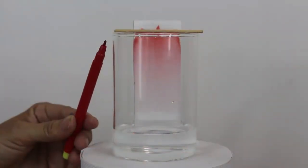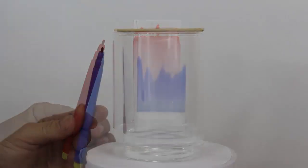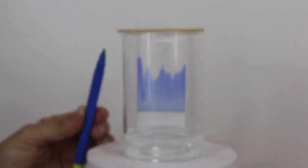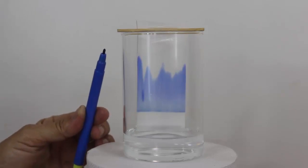In the filter paper marked with red sketch pen, you will observe red color pigment spread on the filter paper. Similarly, you see blue pigment when a blue sketch pen is used.